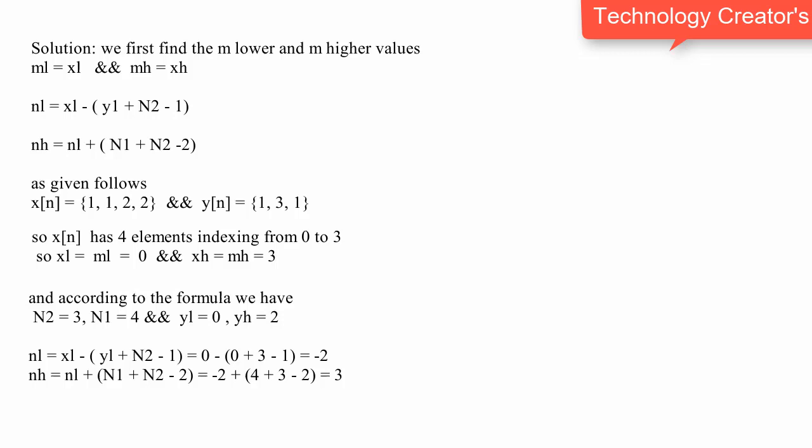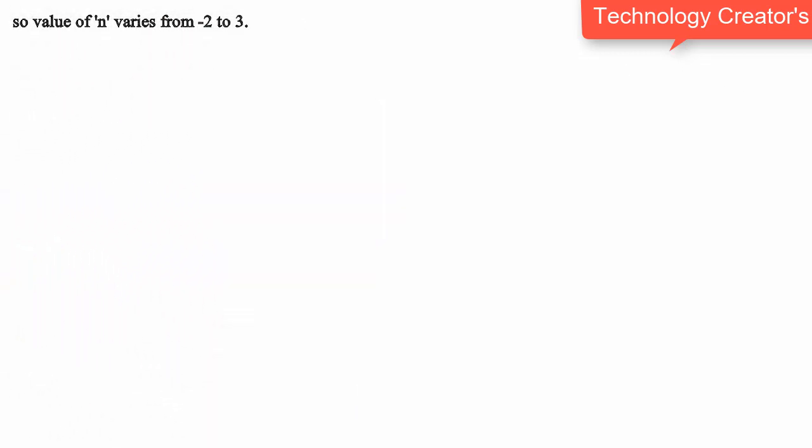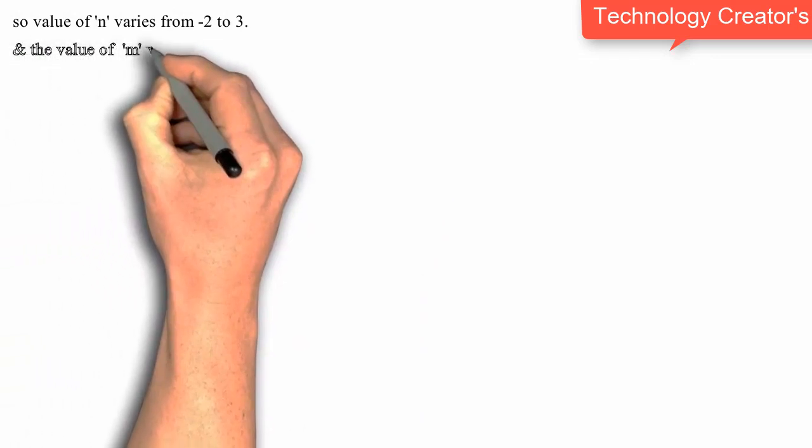N of L and Y of H, similarly X of H and X of L, I have mentioned this in my second video. Now we have to find the values of M of L, M of H, N of L, and N of H, so these values are 0, 3, minus 2, and 3 respectively.